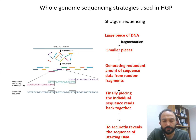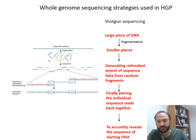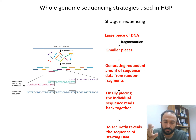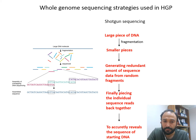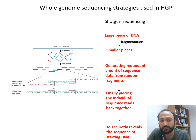The first and foremost technique used in the Human Genome Project to sequence the whole genome was shotgun sequencing. In a simplified way, the method works as follows: a large fragment of DNA is isolated and then fragmented into many smaller pieces — as you can see in the left panel. Those smaller pieces are then used to generate a redundant amount of sequence data from random fragments, and finally the individual sequence reads are pieced back together to accurately reveal the sequence of the starting DNA.